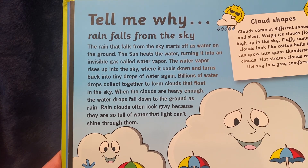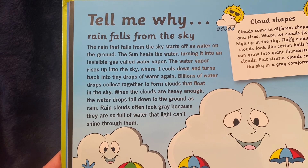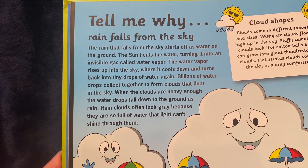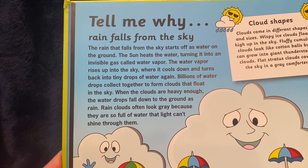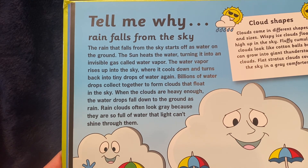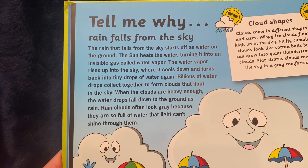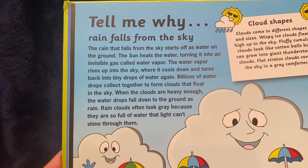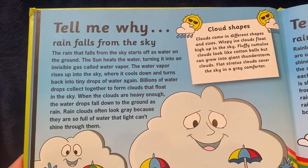Billions of water drops collect together to form clouds that float in the sky. When the clouds are heavy enough, the water drops fall down to the ground as rain. Rain clouds often look gray because they are so full of water that light can't shine through them.